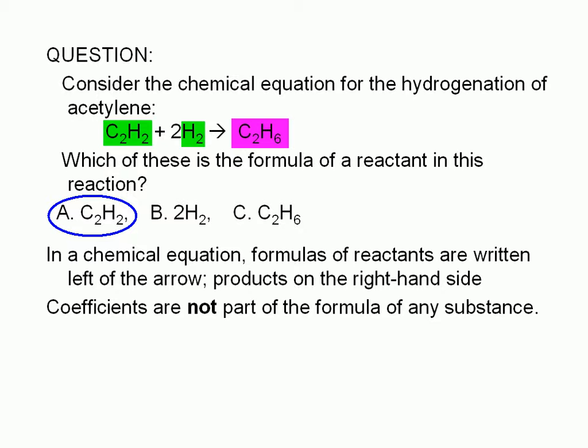Choice C is wrong, since C2H6 is a product, not a reactant. Choice B is also wrong, because coefficients are not part of the formula of any substance.